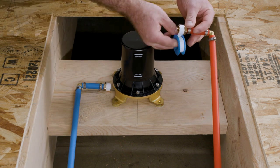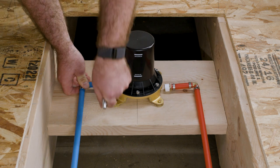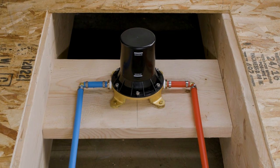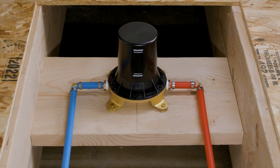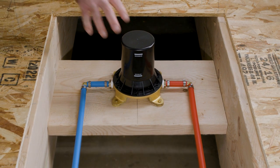Apply sealant tape to the threaded connections. Thread hot and cold supply assemblies into the Rough-In valve inlets. Now remove the Plaster Guard by unscrewing the attachment screws from the assembly. Please set the Plaster Guard and screws aside for later.